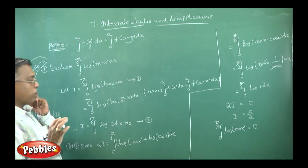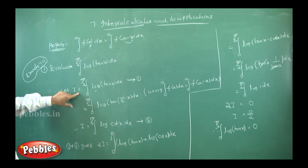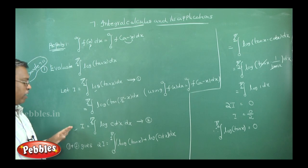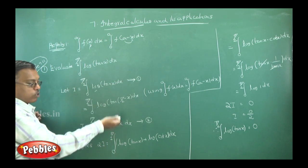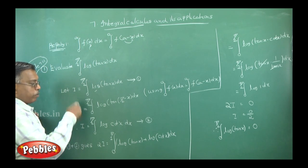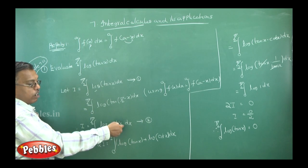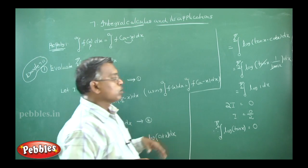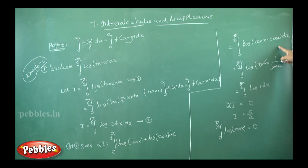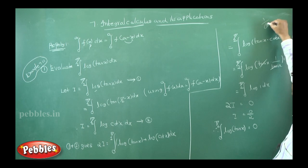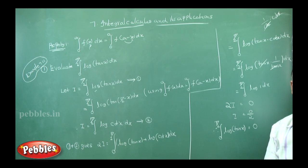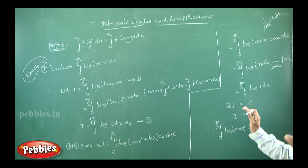Very simple. First, take the given problem and let it be i. Then apply the property to get a second i. Add equation (1) and equation (2), which gives 2i. Here tan becomes cot; add them — log(tan x) plus log(cot x) — use log m plus log n equals log(mn), so tan x times cot x. Convert cot into 1/tan or tan into 1/cot; either way they cancel, giving log 1 equals 0. The full integration becomes 0. Note that sometimes it won't be 0 — you will get a non-zero value. Those kinds of problems we will see next.